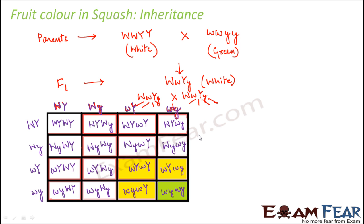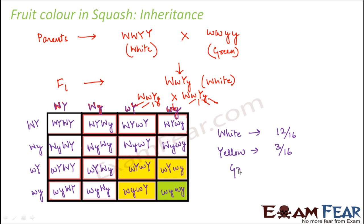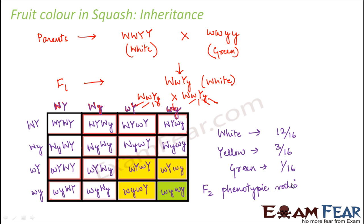Now that we have found out the genotypes of all 16 boxes, we can determine the phenotypes — colored in white, green, and yellow respectively. The F2 phenotypic ratio: 12 out of 16 are white (because 12 boxes have at least one capital W), 3 out of 16 are yellow, and 1 out of 16 is green. So the F2 phenotypic ratio in dominant epistasis is 12:3:1.